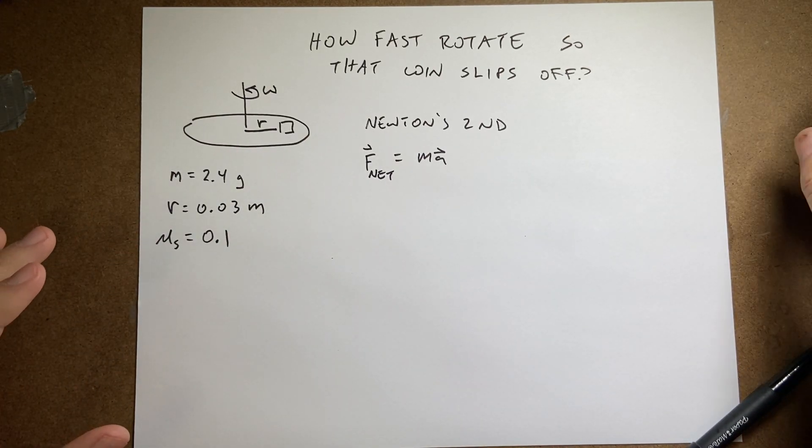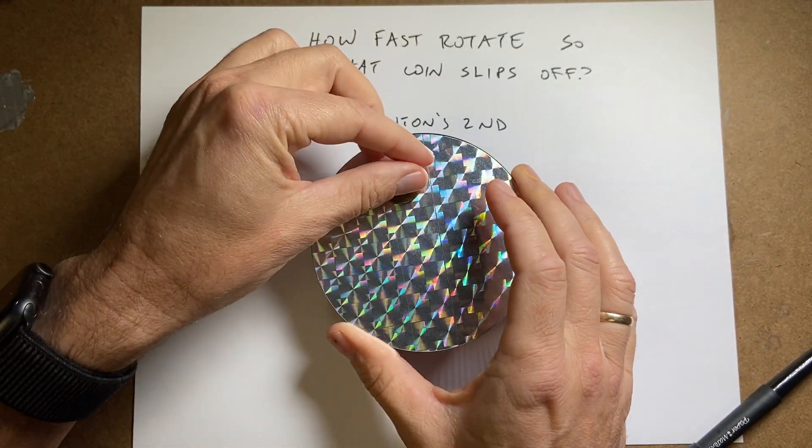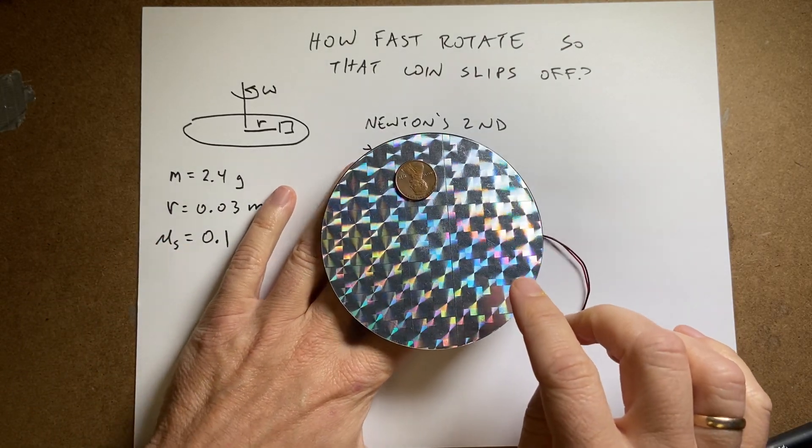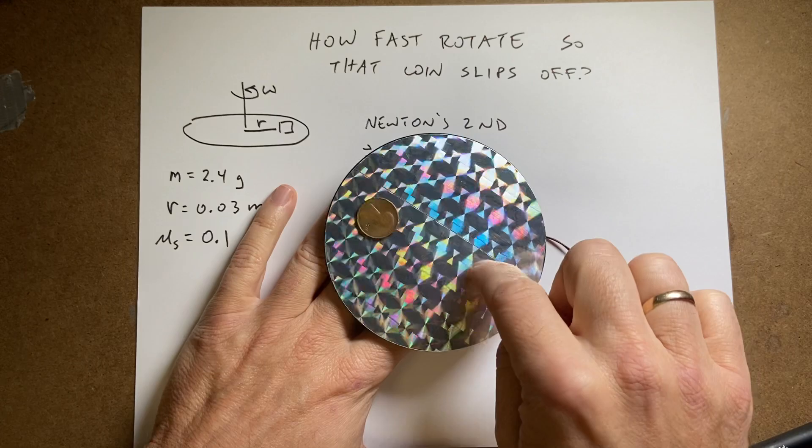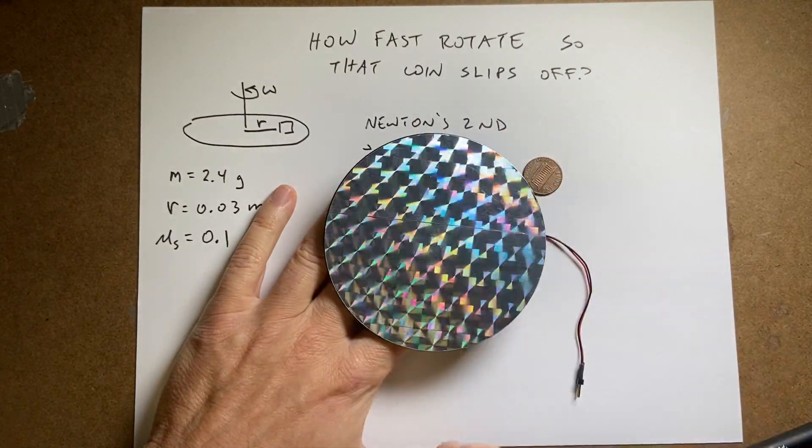Now I actually have this as an actual device. This is actually an electric motor but I'm just going to spin it. And I have a penny right there. So you can see that as I spin this the penny stays there. But if I spin it too fast the penny falls off.